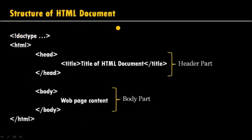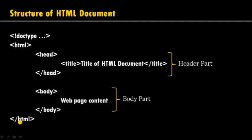This is the basic structure of an HTML document. First we have to write the doctype tag, which defines the document type and tells the browser what type of document is going to be used. The HTML document starts with the html tag and ends with the closing html tag. This html tag has two main parts: one is the header part and another is the body part.